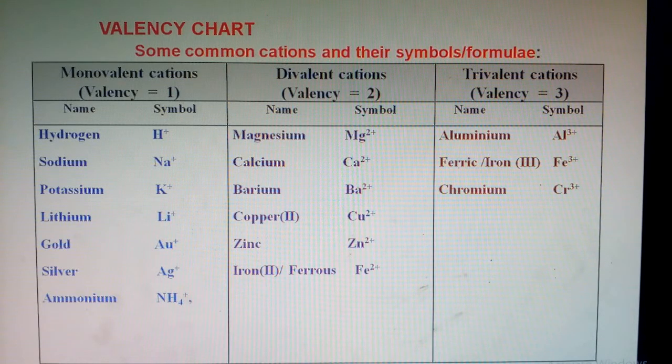Monovalent cations include hydrogen, sodium, potassium, lithium, gold, silver, and ammonium. Divalent cations include magnesium, calcium, barium, copper, zinc, and iron (ferrous). Trivalent cations include iron (ferric), chromium, and aluminum.